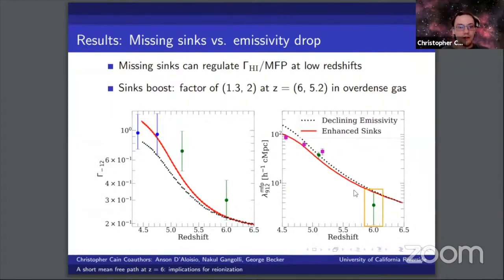Our main conclusion here is that adding additional sinks to our model can indeed regulate the photoionization rate and mean free path at the lowest redshifts. Notice that the mean free path here on the right is in good agreement at all redshifts with all the measurements, and the photoionization rate measurements also agree well with the theory.